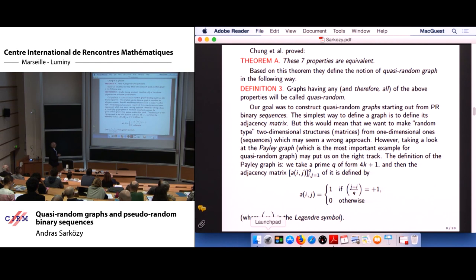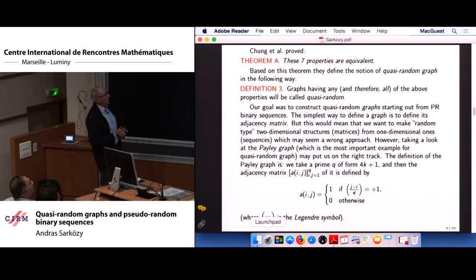Our goal was to construct quasi-random graphs in our first paper. Later we will switch to more general pseudo-random graphs. Our goal was to construct quasi-random graphs starting out from pseudo-random binary sequences. As I said, the simplest way to define a graph is to define it by giving its adjacency matrix. However, this would mean that we want to make random two-dimensional structures, the matrices, the adjacency matrices, from one-dimensional ones, that is from sequences, which may seem a wrong approach. So it is not clear how to make something two-dimensional out of a one-dimensional one. So it is sort of suspicious.